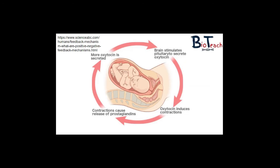Another example of positive feedback is what happens during childbirth. There is the release of a hormone called oxytocin, which intensifies the contractions of the uterus so that labour can proceed to its conclusion. The birth itself will restore the system by removing the initiating stimulus — the baby coming out of the body. After birth, levels of milk production and the hormone prolactin will increase, and the suckling of the baby on the mother's breast will cause the release of oxytocin and continue to stimulate milk release. When the baby stops suckling, milk production will then decrease.